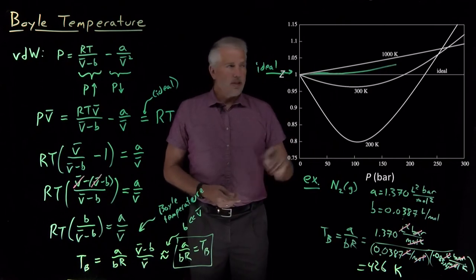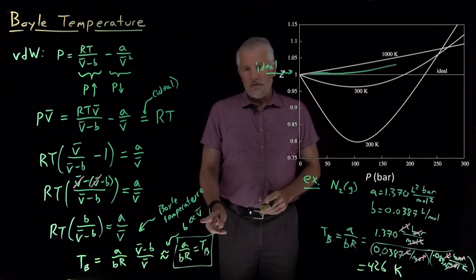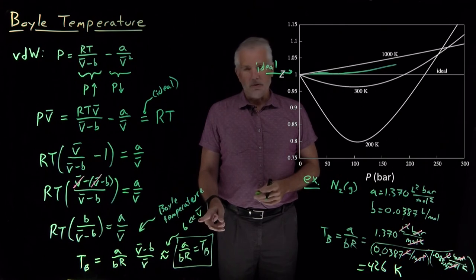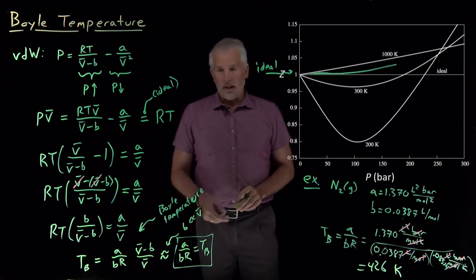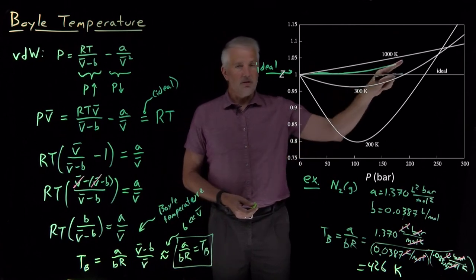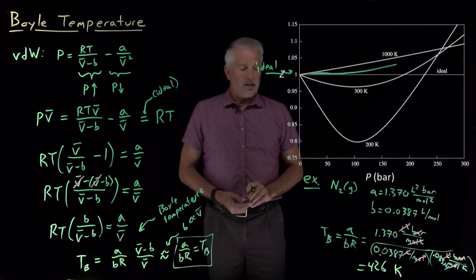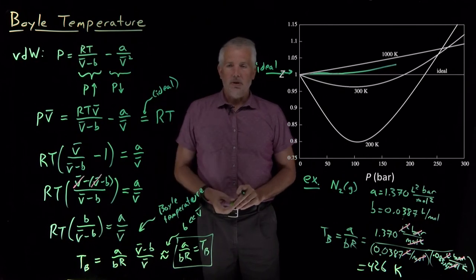And what that's representing is the point where the volume is, in fact, we've increased the pressure to the point where the volume is, in fact, no longer much, much greater than the finite molecular volume. So at those pressures, it does start to deviate from the ideal gas law. But the main point of this quantity, the Boyle temperature.